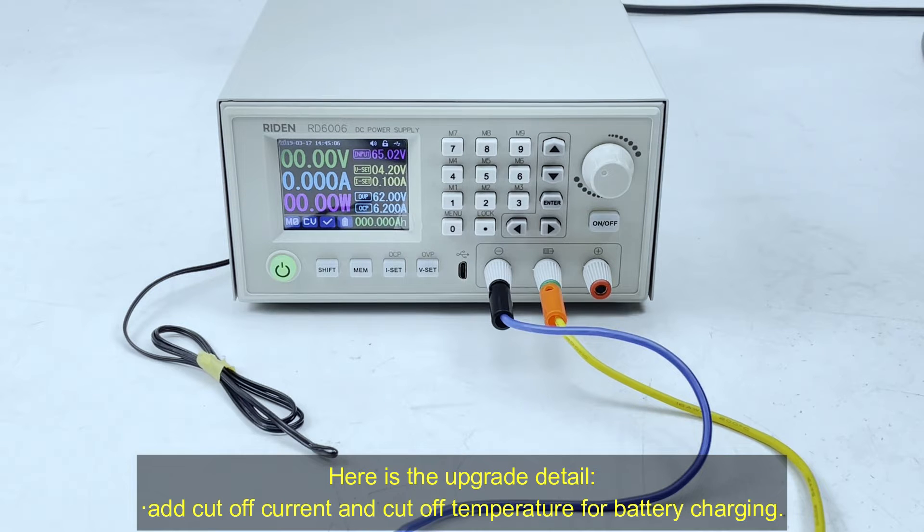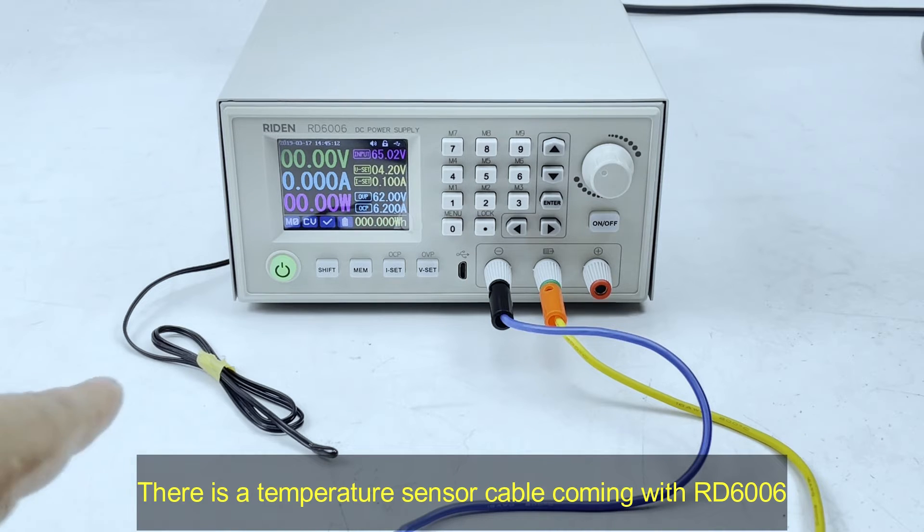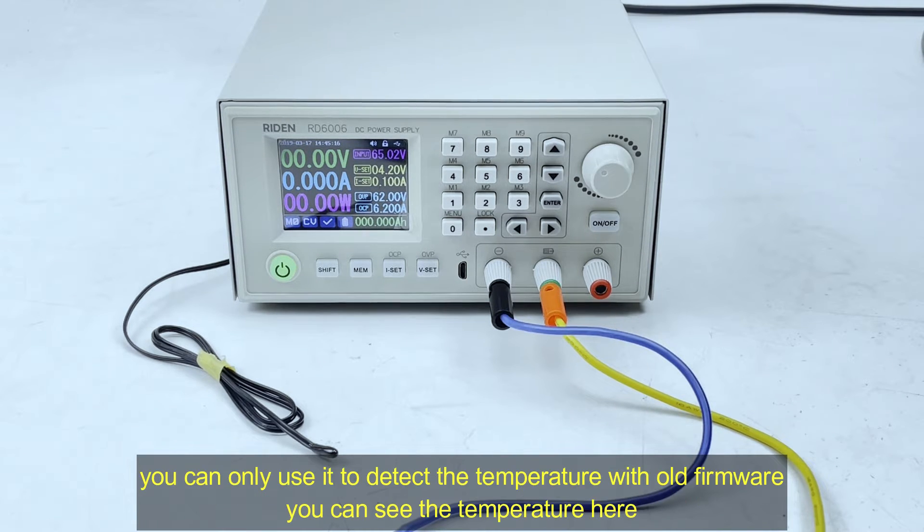Add cutoff current and cutoff temperature for battery charging. There is a temperature sensor coming with the RD6106. You can use it to detect the temperature.